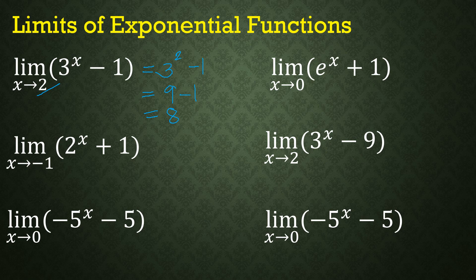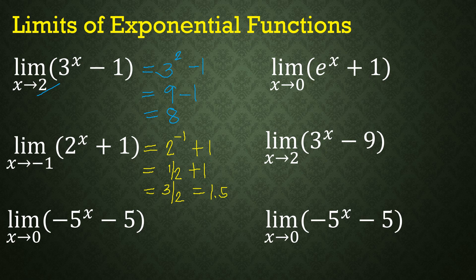On the second example, substitute x = -1: we get 2^(-1) + 1. Since 2^(-1) = 1/2, we have 1/2 + 1 = 3/2, which is also equal to 1.5 or 1 and 1/2 in mixed form.